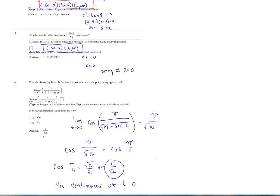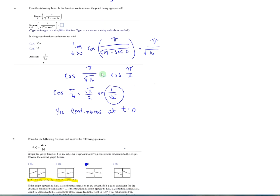Number 5. Number 5 says at what points is this continuous? You have a denominator of 5x. If we set that equal to 0, we find that the point of discontinuity is at x equals 0. To put that in interval notation, it would be negative infinity to 0, parentheses, union, 0 to infinity. That's the only point of discontinuity.